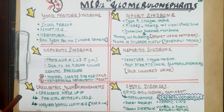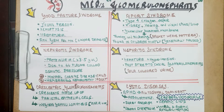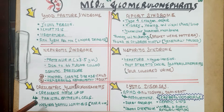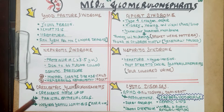In crescentic glomerulonephritis, the most important and 90% exam-tested fact is that the crescents are made up of parietal epithelial cells. In Wegener's granulomatosis, which is an example of a pauci-immune crescentic glomerulonephritis, the ANCA antibody is positive.